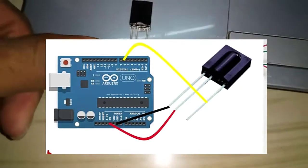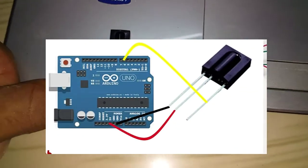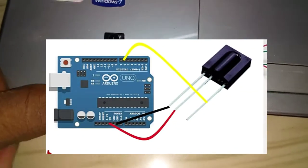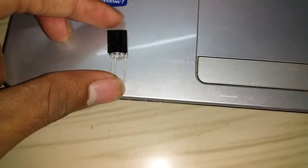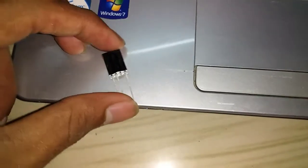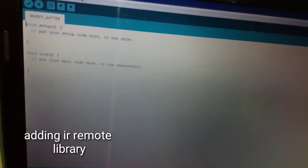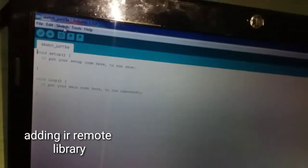There is a ground pin, a VCC pin, and additional pins. There are jumpers. Now we have to install the library. Here we have an IR remote library. We have to install the library in the Arduino IDE.